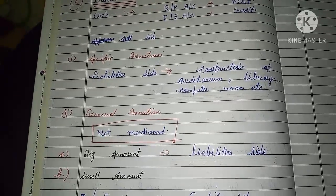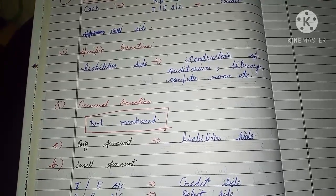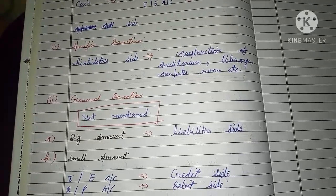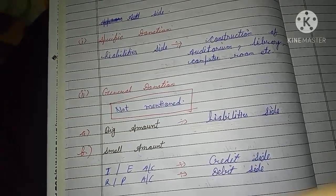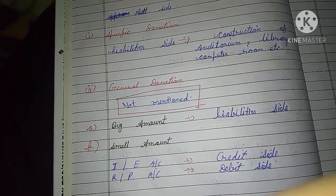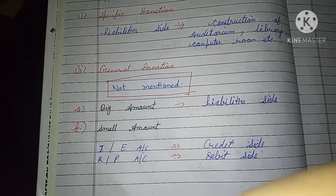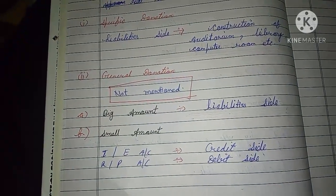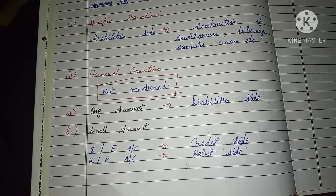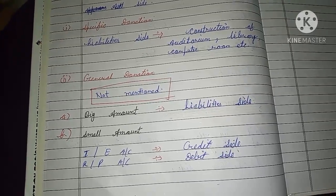Then we have the general donation. A general donation is one where the donor does not specify any purpose for the money. Whatever the organization does with it is its own choice — the donor does not mention to whom or for what the donation will be given. General donations can be of two types: large amount and small amount.